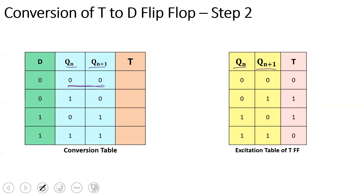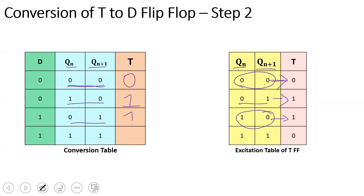The conversion table is filled with reference to the excitation table. For present state and next state combination 0,0 — looking at the excitation table, the corresponding T is 0. For combination 1,0, the corresponding T is 1. Similarly, for 0,1, T is 1. And for 1,1, T is 0.